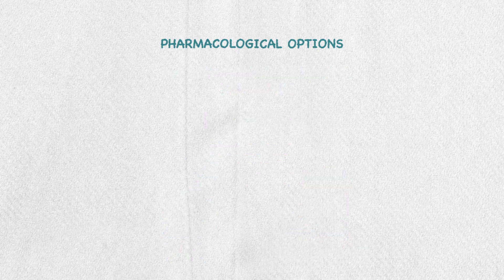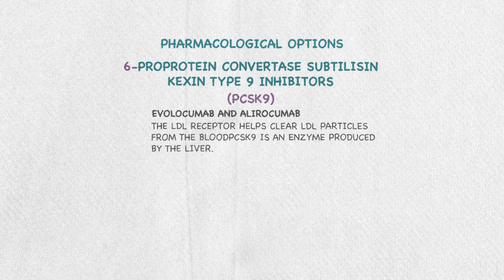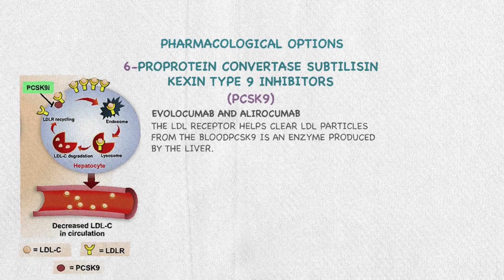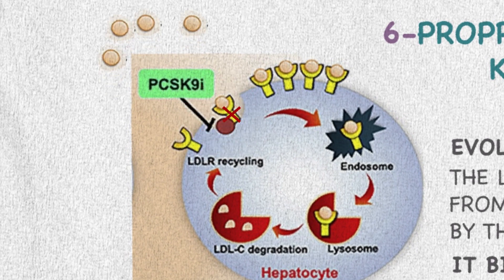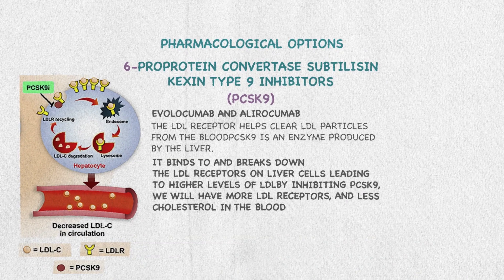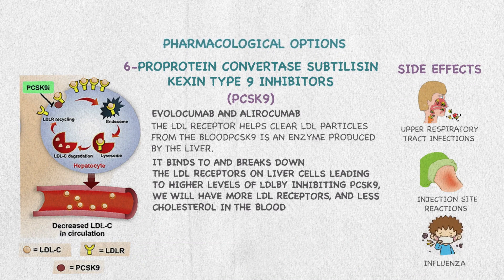The last group is the PCSK9 inhibitors like evolocumab and alirocumab. The LDL receptors help clear LDL particles from the blood, but PCSK9 is an enzyme produced in the liver that binds and breaks down the LDL receptors in the liver cells, leading to higher levels of LDL. By inhibiting PCSK9, we will have more LDL receptors and less cholesterol in the blood. Side effects include upper respiratory tract infection, injection site reaction, and influenza.